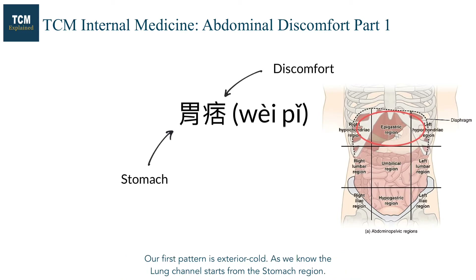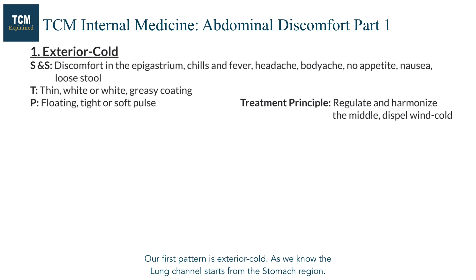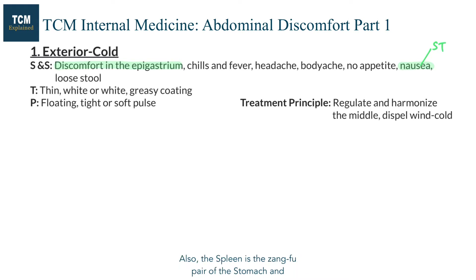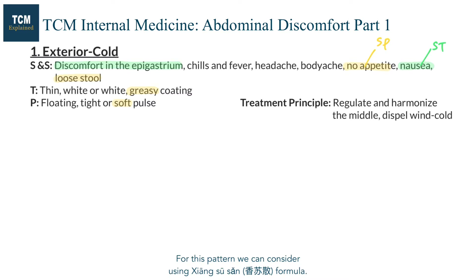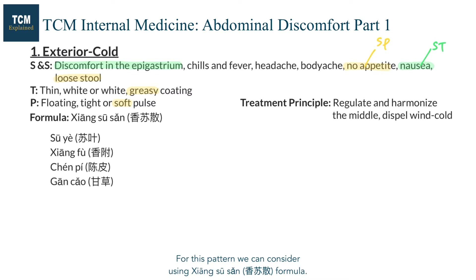Our first pattern is exterior cold. As we know, the lung channel starts from the stomach region. So when we have an exterior invasion, our stomach can be affected as well. Also, the spleen is the zhangfu pair of the stomach and the taiyin pair of the lungs, so the spleen may be affected as well. For this pattern, we can consider using xiangsu san formula.